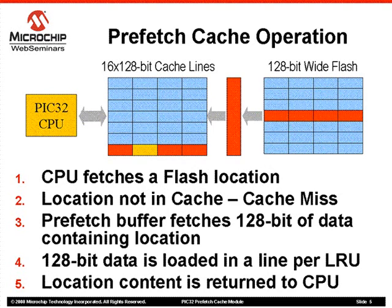Now let's see how the Prefetch Cache Module operates. In Step 1, the CPU fetches a specific flash location — it could be for an instruction or a constant data. Step 2, assume that this is the first time the CPU is accessing this location, meaning the cache does not contain that particular location. This condition is called a Cache Miss. Step 3, now that there was a cache miss, the Cache Logic instructs the Prefetch Buffer to read the flash memory. The Prefetch Logic will wait a predetermined number of cycles before reading the flash memory. Step 4, once the 128 bits of data is loaded in the Prefetch Buffer, it is copied to an available cache line in cache.